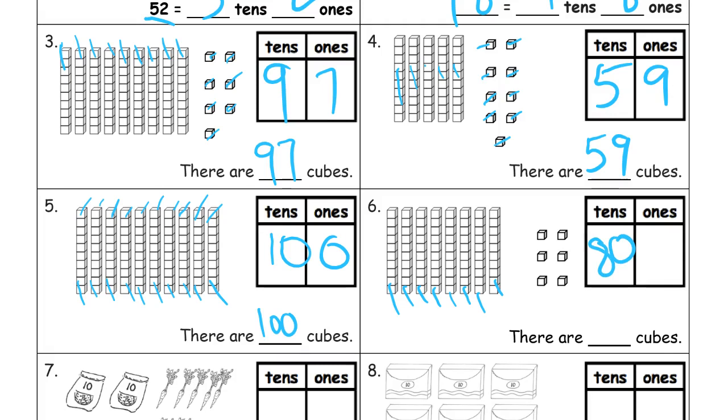We don't want to have, because otherwise this would end up being 806. And it's not. There are how many tens? There are eight tens, eight groups of ten. And there are six ones, so there's 86 cubes.